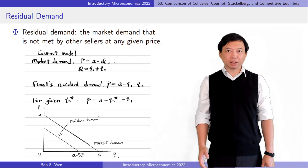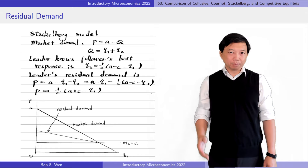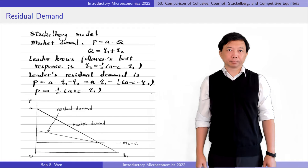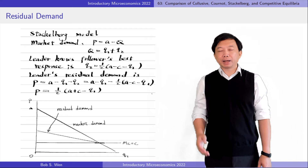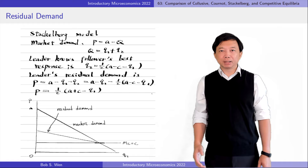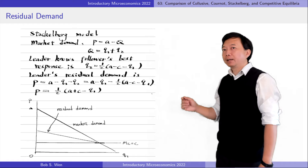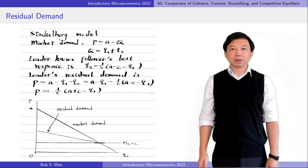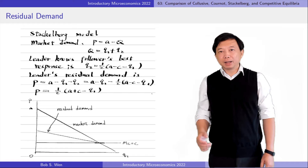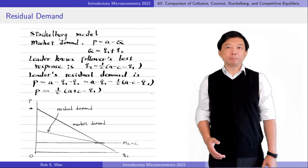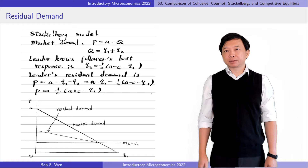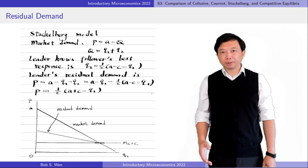However, in the Stackelberg model, the leader's residual demand curve looks different. We also use the same market demand setting, P equals A minus Q, and the market output Q is the sum of the leader's and follower's quantities. We have learned from previous videos that the follower's best response function is Q2 equals one-half times (A minus C minus Q1). The leader takes advantage of it and plugs it into its residual demand function. The leader's residual demand function becomes P equals A/2 plus C/2 minus Q1/2. The leader's residual demand curve is flatter than the market demand curve, with a slope of minus one-half.